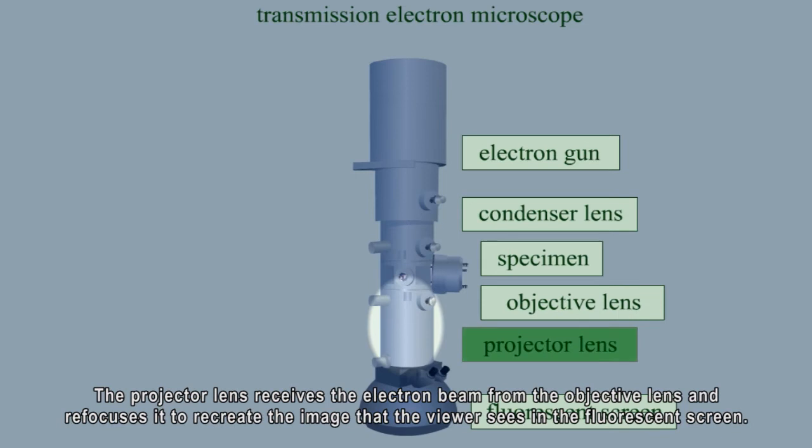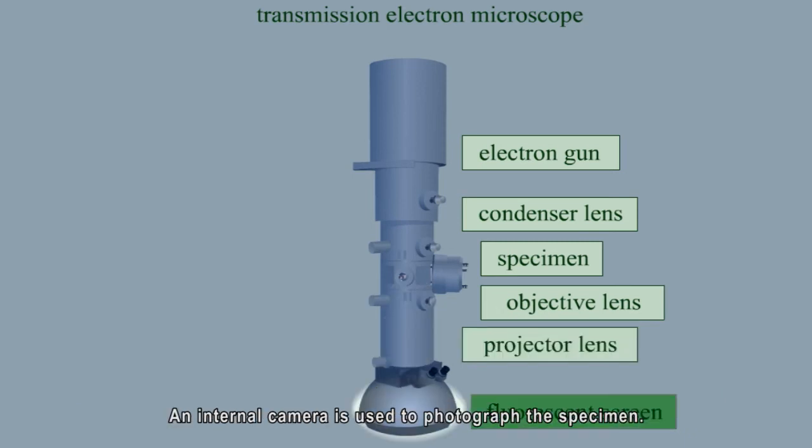The projector lens receives the electron beam from the objective lens and refocuses it to recreate the image that the viewer sees in the fluorescent screen. An internal camera is used to photograph the specimen.